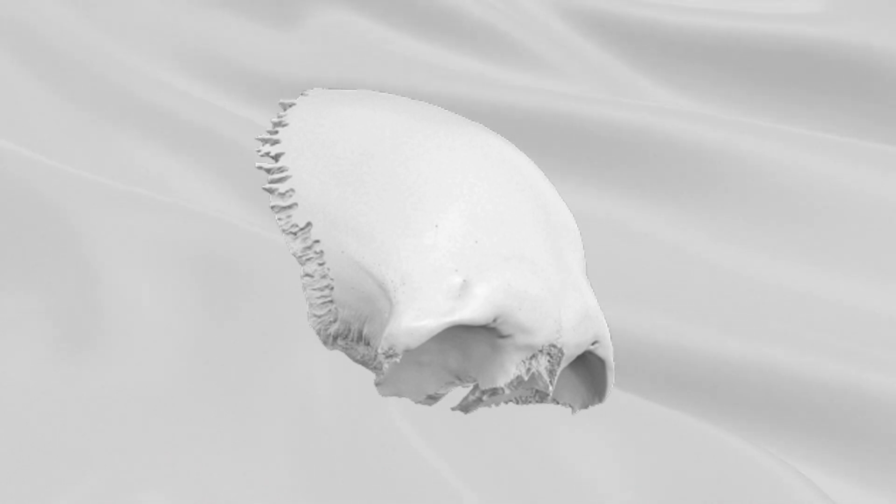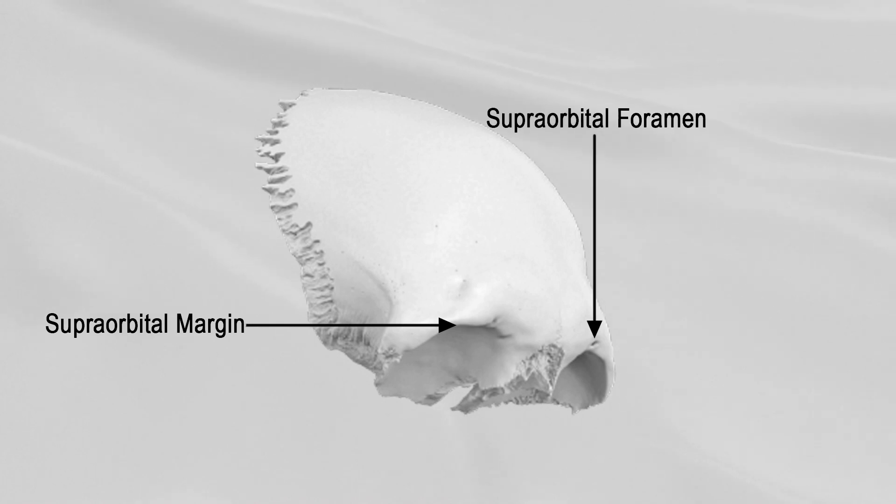Beneath each superciliary arch is a curved and prominent margin, the supraorbital margin, which separates the squama from the orbital portion of the bone. The lateral part of this margin is sharp, while the medial part is rounded. At the junction of its medial one-third and lateral two-thirds is a notch, sometimes converted into a foramen, the supraorbital notch or supraorbital foramen, which transmit the supraorbital vessels and nerve.